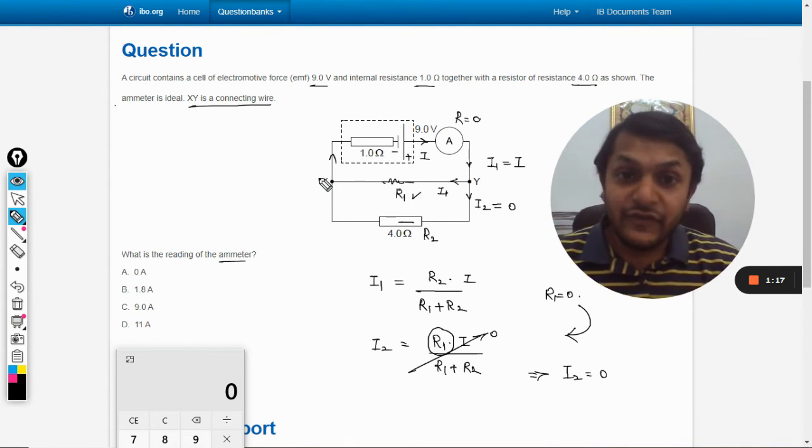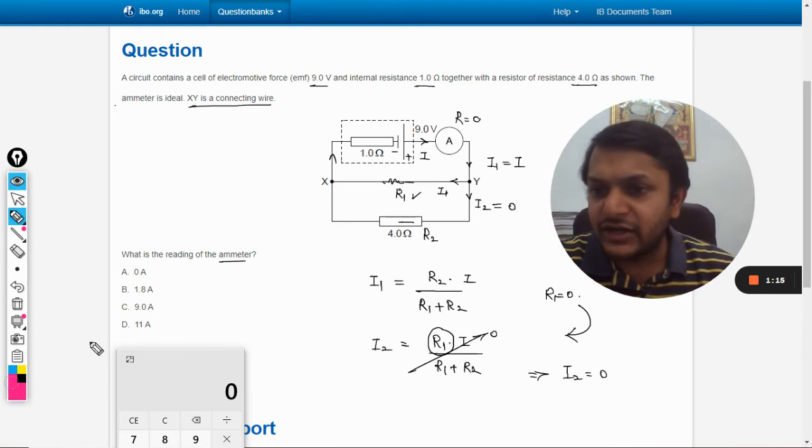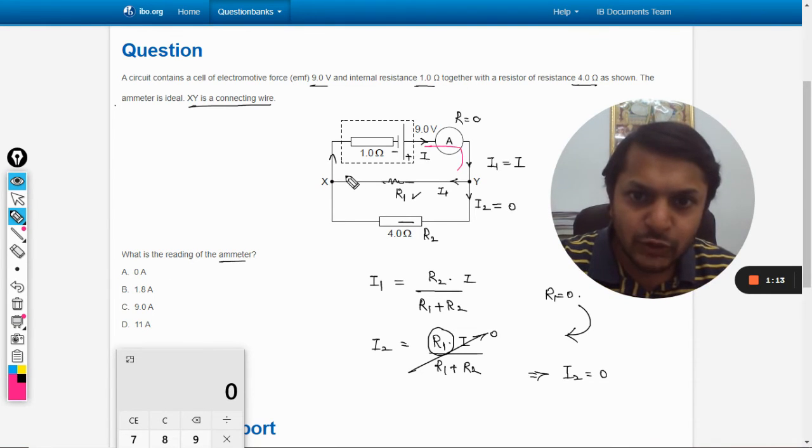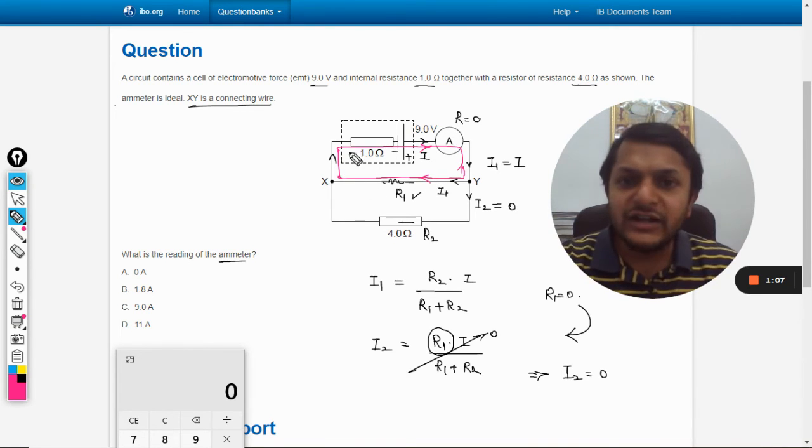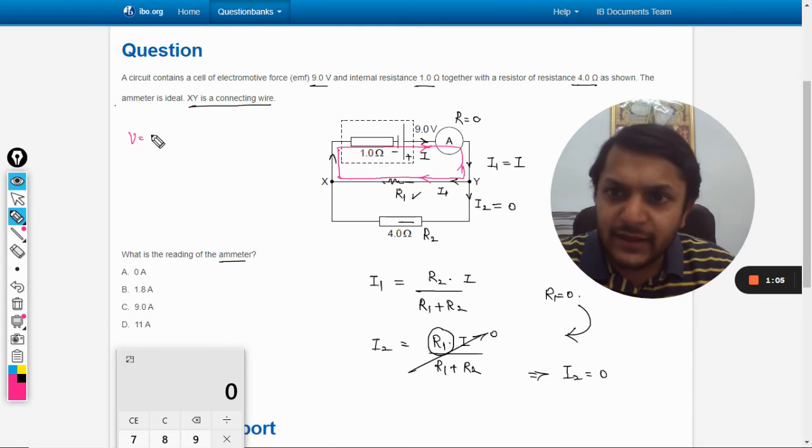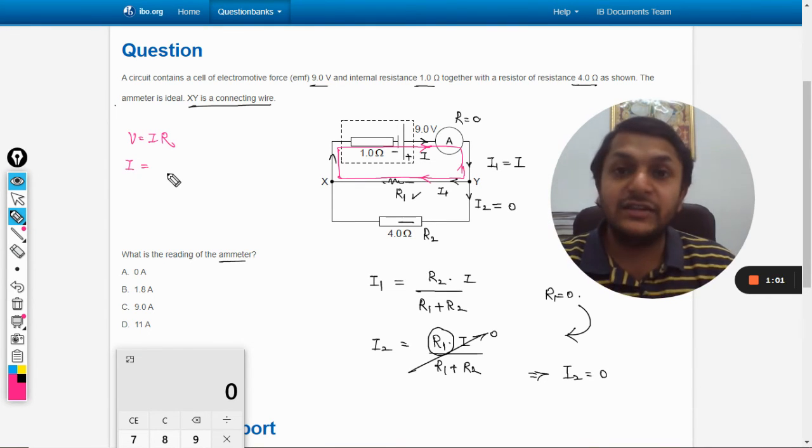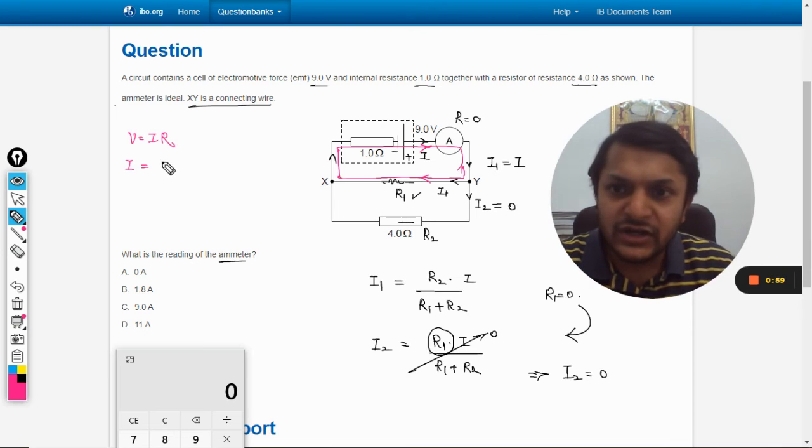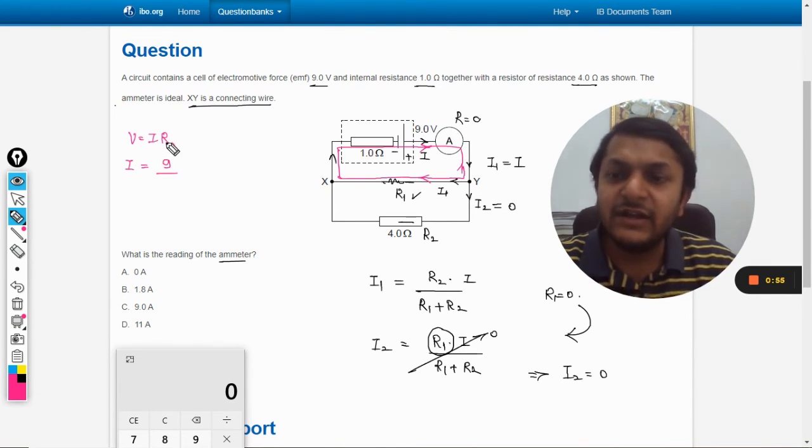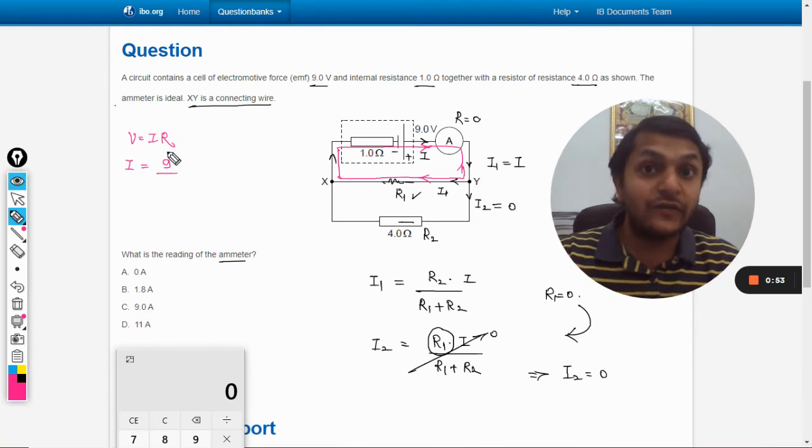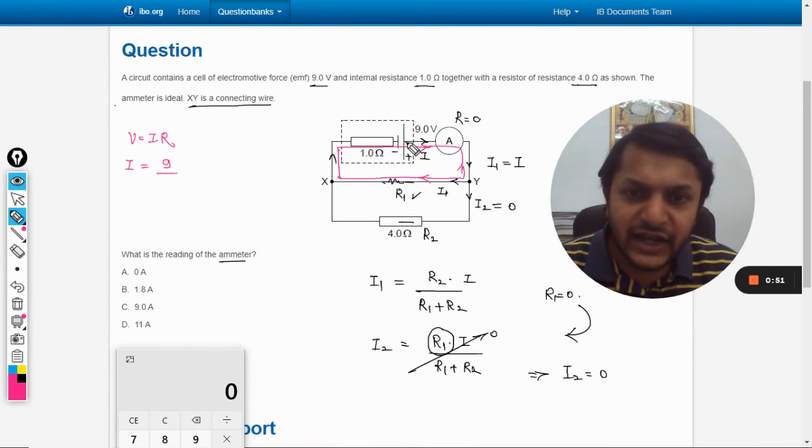So now, learning these things, we reach this conclusion that current will flow only in this loop, like this. So if current is flowing in this loop, we can apply V is equal to IR. We want to find the current, that is total current, the reading of ammeter. What is the voltage applied? Voltage applied is 9, divided by the total resistance of the circuit.